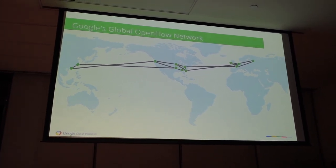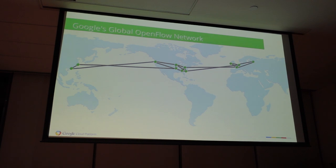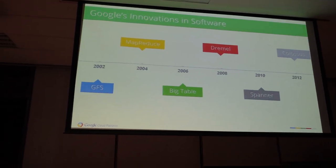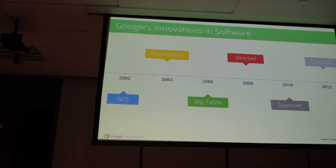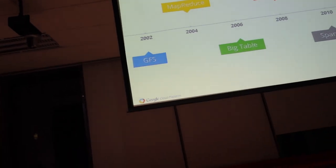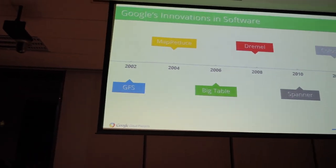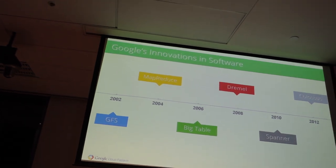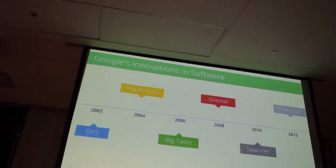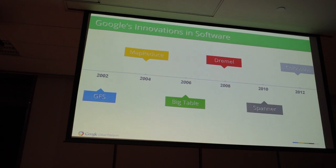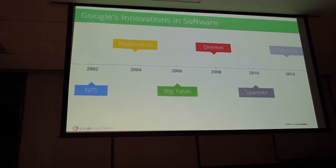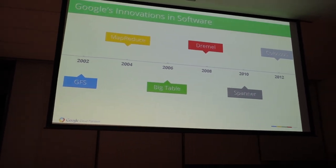The world is talking a lot about software-defined networks, and the thing is that Google has been doing this. We have run on the global OpenFlow for over the past two years already. This really helps us to improve our operations and decrease cost and improve performance for our network. We have this network that connects all our data centers around the world.